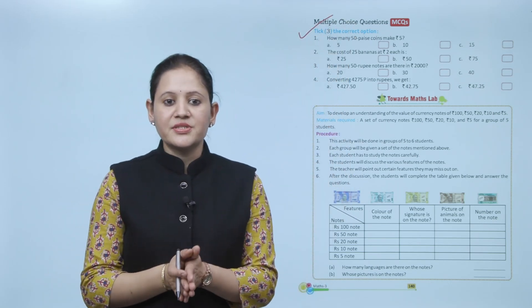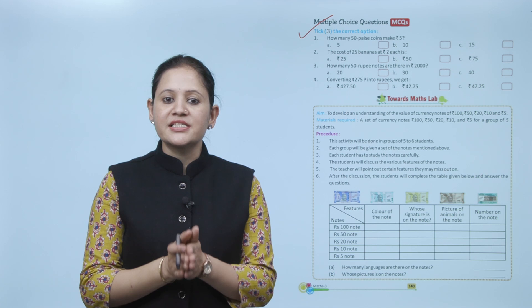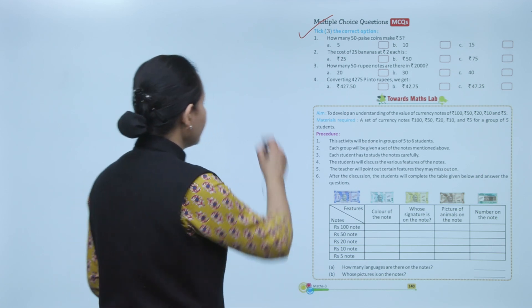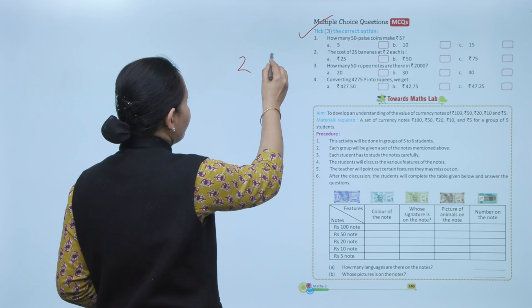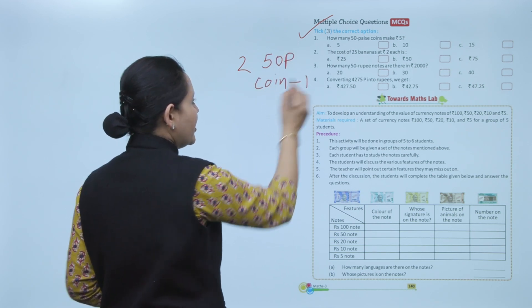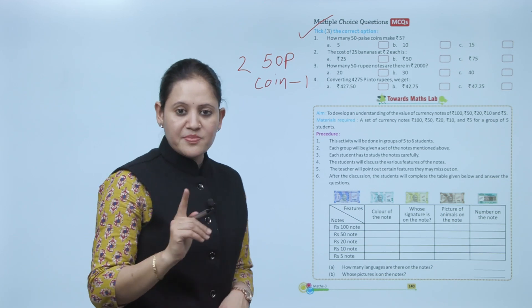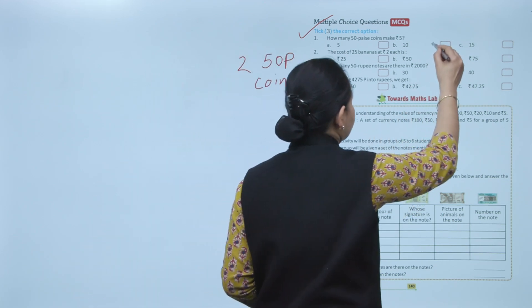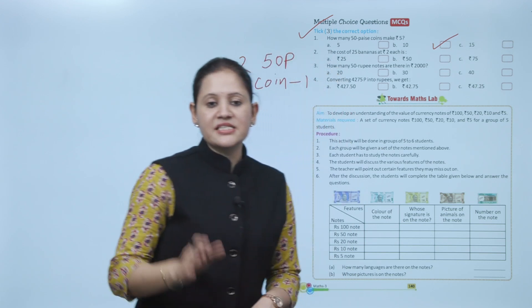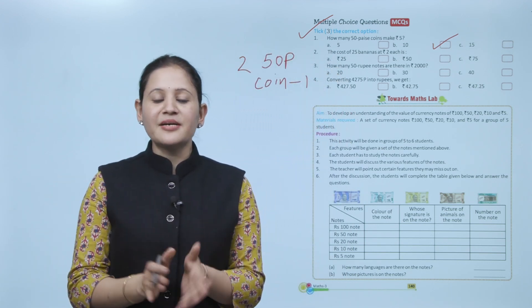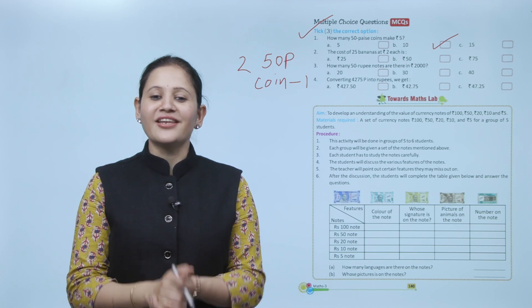Next, multiple choice question: How many 50 paisa coins make rupees 5? As you know, two 50 paisa coins make one rupee. So in 5 rupees, ten 50-paisa coins make 5 rupees. Here we end the chapter — I hope you understood it well. Now you have to practice it.